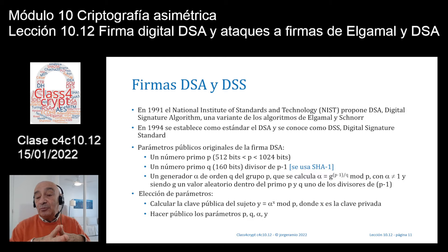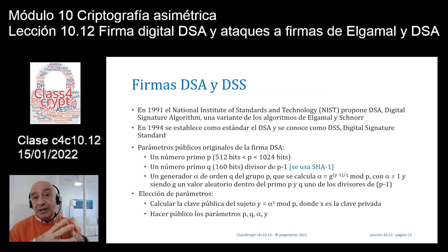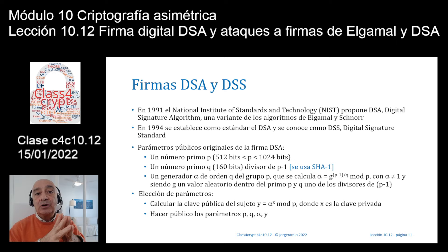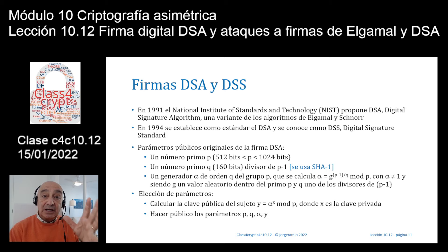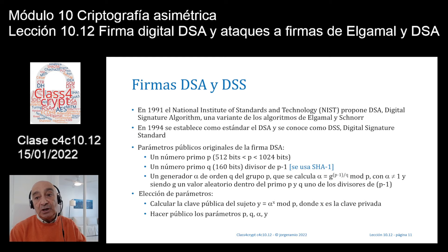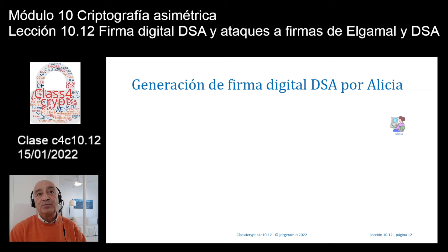A continuación hay que generar los parámetros de clave. Cada usuario calcula su clave pública Y = alfa^X mod P, donde X es la clave privada. Se hacen públicos el primo P grande, el primo Q pequeño del orden de la función hash, ese valor alfa especial y la clave pública del sujeto. Hoy en día los valores son 2048 bits para P, no 1024, y SHA2 en vez de SHA1, con lo que Q es de 224 o 256 bits.